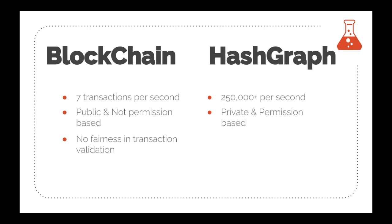There is no fairness in transaction validation in blockchain because miners manually choose which transactions go into blocks, always favoring those with higher transaction fees — users must pay extra to get priority. In hashgraph, this cannot happen because it is timestamp-based, ensuring fairness through sequence and voting. It is simple first-come, first-served, keeping the network fair compared to blockchain where financial incentives can let transactions skip the line.